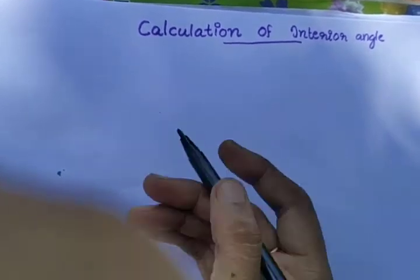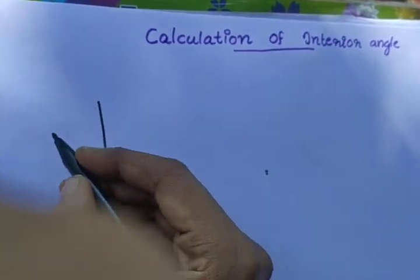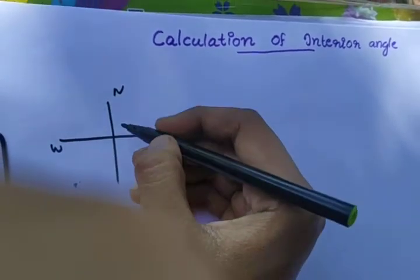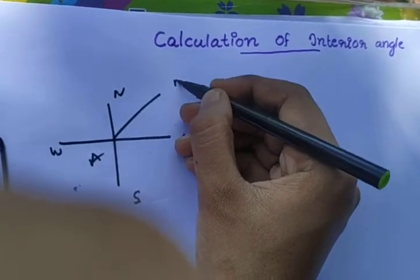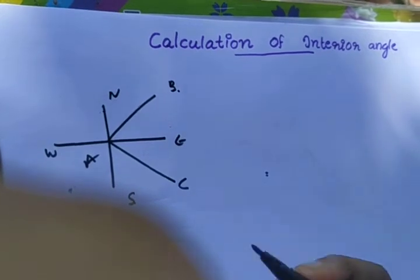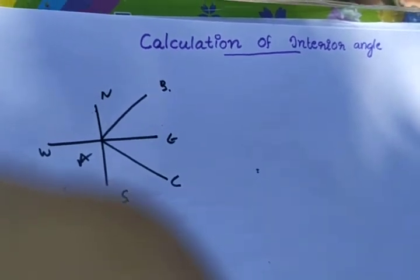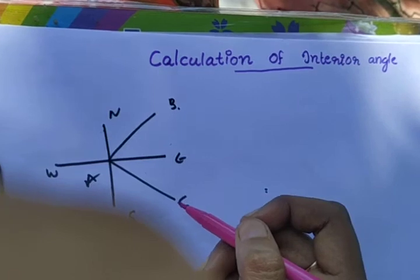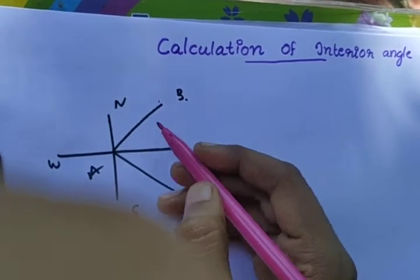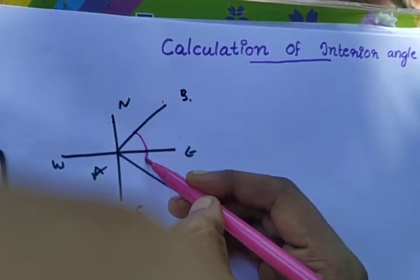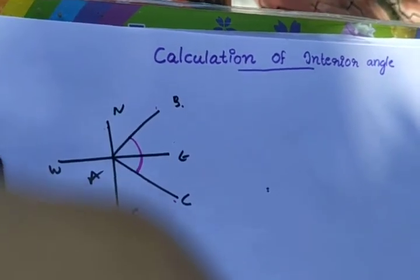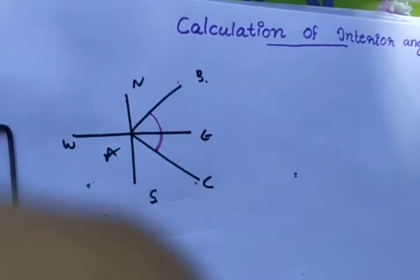We see a quadrant — east, west, north, south — with two lines AB. With A as a centre, these are two lines. This line is called A-B and A-C. This angle is closed.